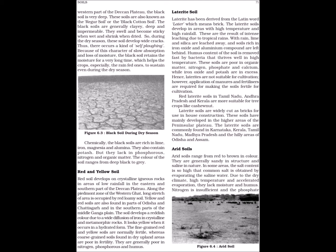Laterite soil. Laterite has been derived from the Latin word 'later' which means brick. The laterite soils develop in areas with high temperature and high rainfall. These are the result of intense leaching due to tropical rains. With rain, lime and silica are leached away and soils rich in iron oxide and aluminium compounds are left behind. Humus content of the soil is removed fast by bacteria that thrive well in high temperature. These soils are poor in organic matter, nitrogen, phosphate and calcium, while iron oxide and potash are in excess.